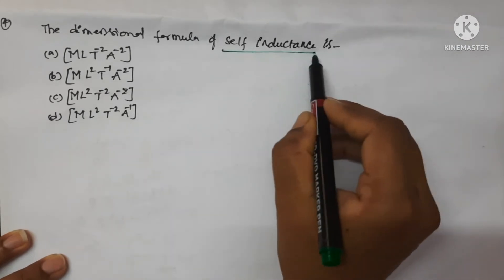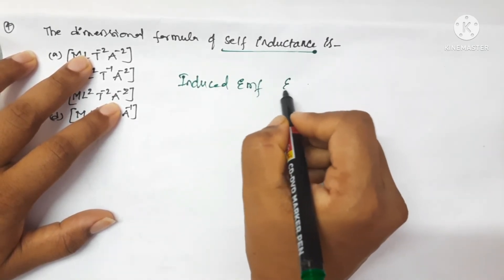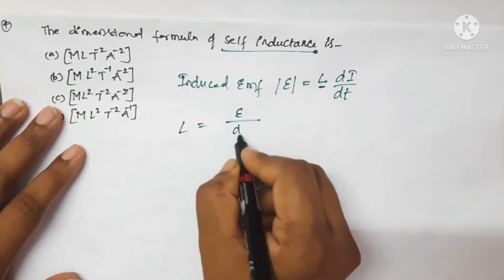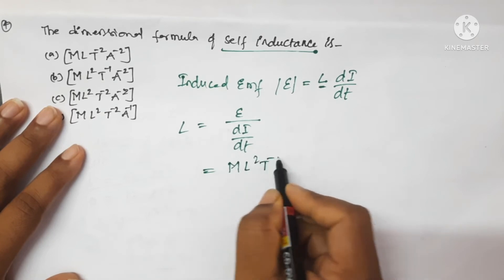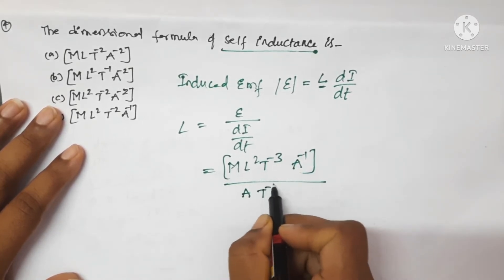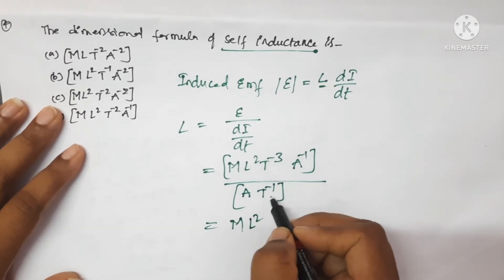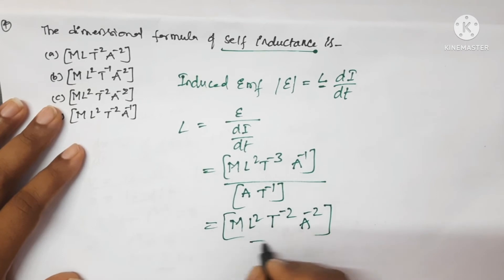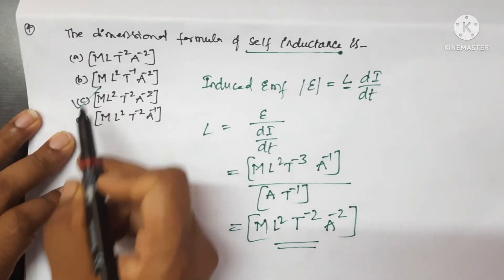Next question: the dimensional formula of self inductance. Write the formula of induced EMF: ε = L × (di/dt), so L = ε / (di/dt). Writing the dimensions of induced EMF: ML²T⁻³A⁻¹, upon di which is A, and dt which is T⁻¹. This gives ML²T⁻²A⁻². This is the dimensional formula for self inductance. C is the correct option.